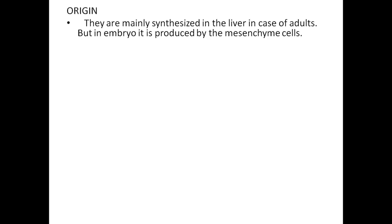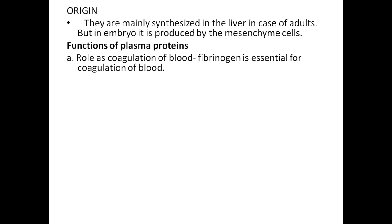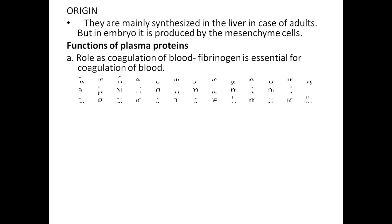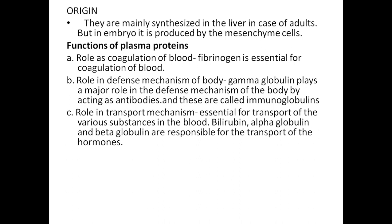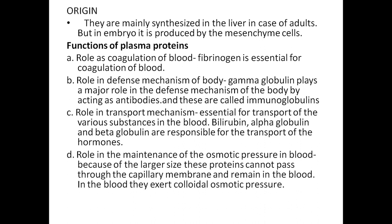The origin of plasma proteins: they are mainly synthesized in the liver in adults, but in the embryo they are produced by mesenchymal cells. Functions of plasma proteins: fibrinogen is essential for coagulation of blood. Gamma globulins play a major role in defense mechanism by acting as antibodies — these are called immunoglobulins. Plasma proteins are essential for transport of various substances in the blood; alpha globulin and beta globulin are responsible for transport of hormones. Proteins also help in maintenance of osmotic pressure — due to their large size they cannot pass through the capillary membrane.